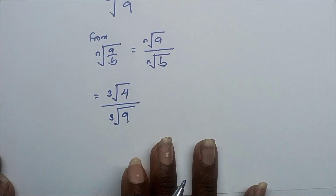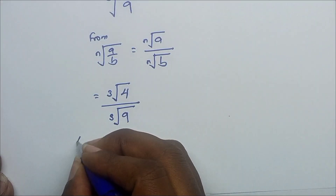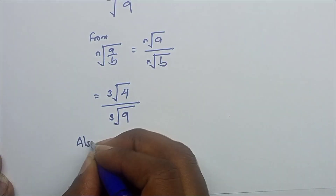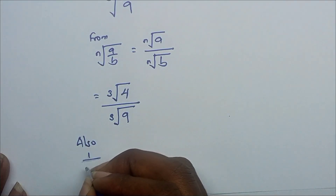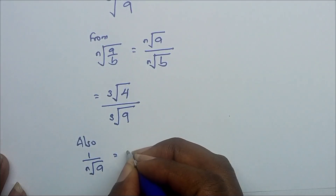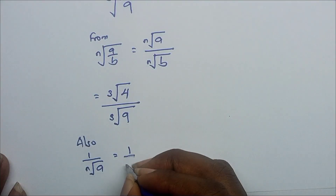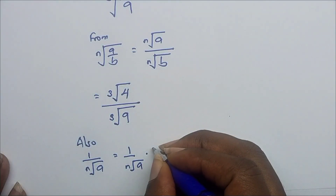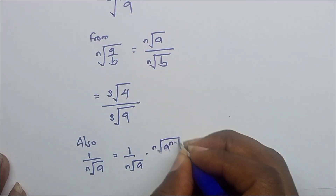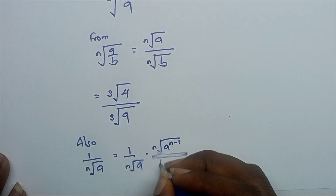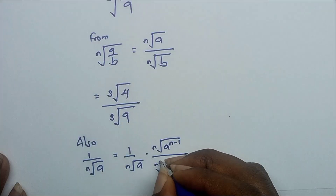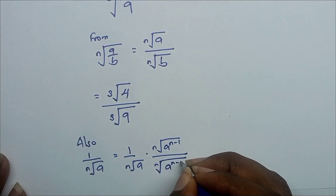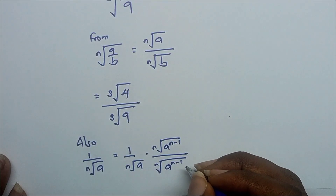To rationalize the denominator, we use the identity: 1 over the nth root of a equals nth root of a to the power (n minus 1), all over nth root of a to the power n minus 1.